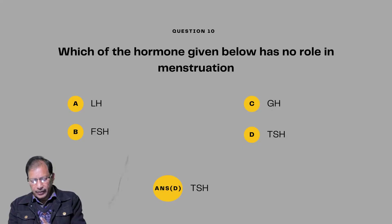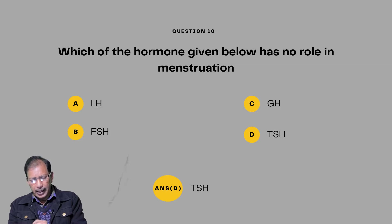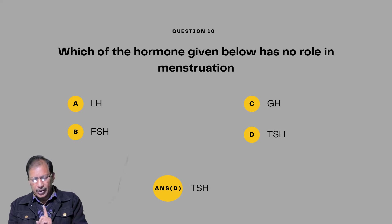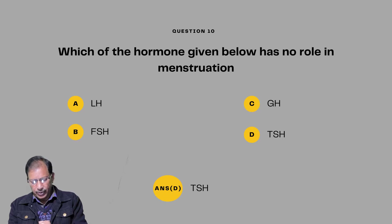Question number ten: Which of the hormones given below has no role in menstruation? LH — luteinizing hormone; FSH — follicle stimulating hormone; GnRH — gonadotropin releasing hormone; TSH — thyroid stimulating hormone. Answer will be TSH — thyroid stimulating hormone has no role in menstruation.